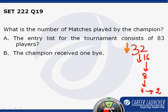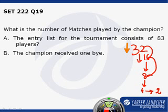We can easily say if the number of players are 32, then the total number of rounds will be: after 1 round it will be 16, after 2 rounds 8, after 3 rounds 4, and after 4 rounds 2.